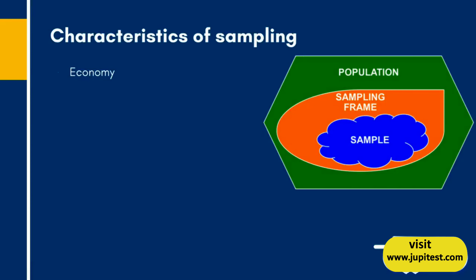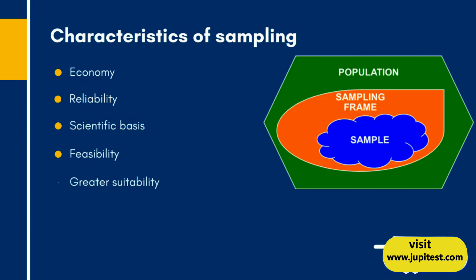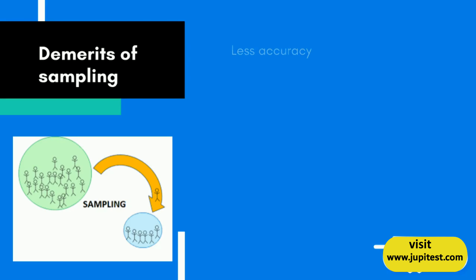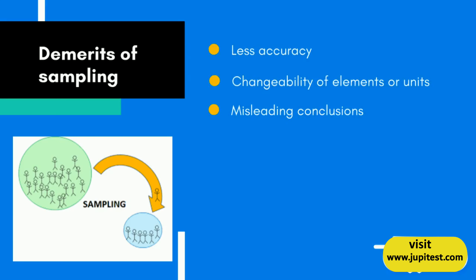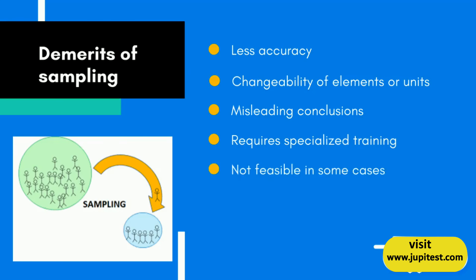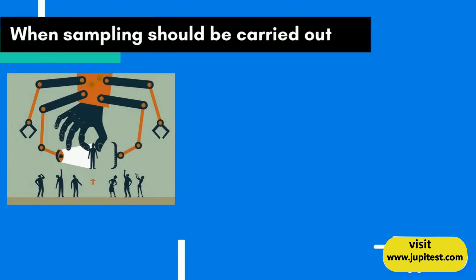Characteristics of sampling include economy, reliability, scientific basis, feasibility, greater suitability, and better generalizations. The merits of sampling are noted, while the demerits include less accuracy, changeability of elements or units, misleading conclusions, requires specialized training, and not feasible in some cases.